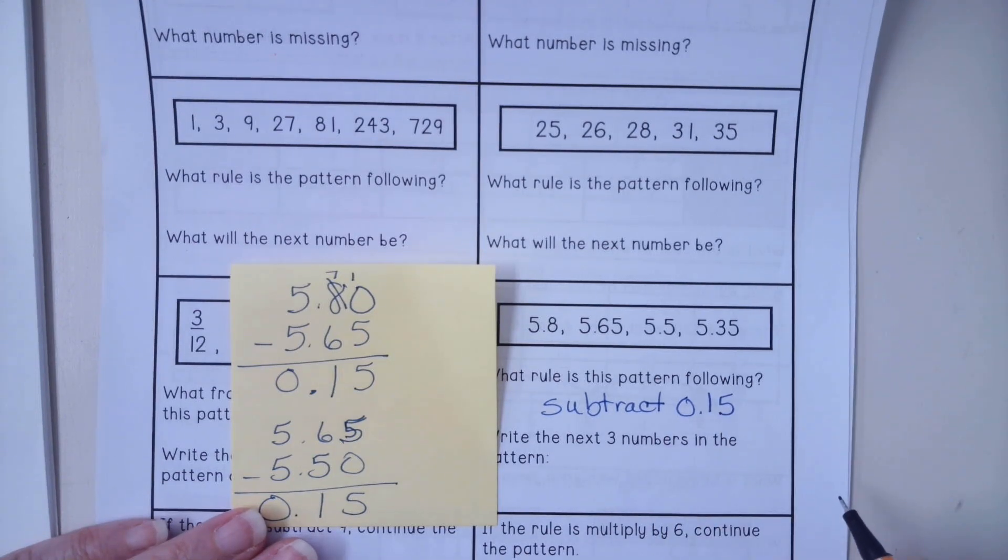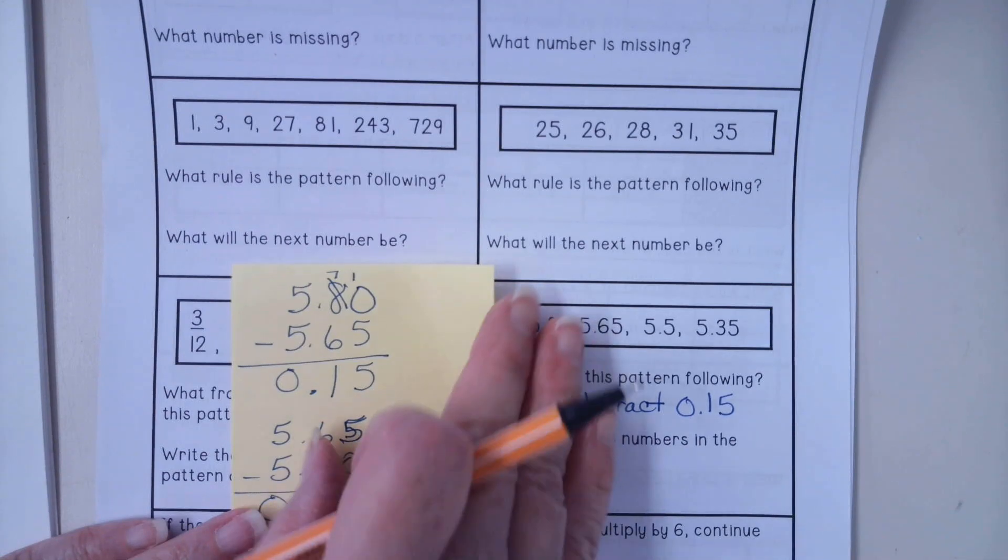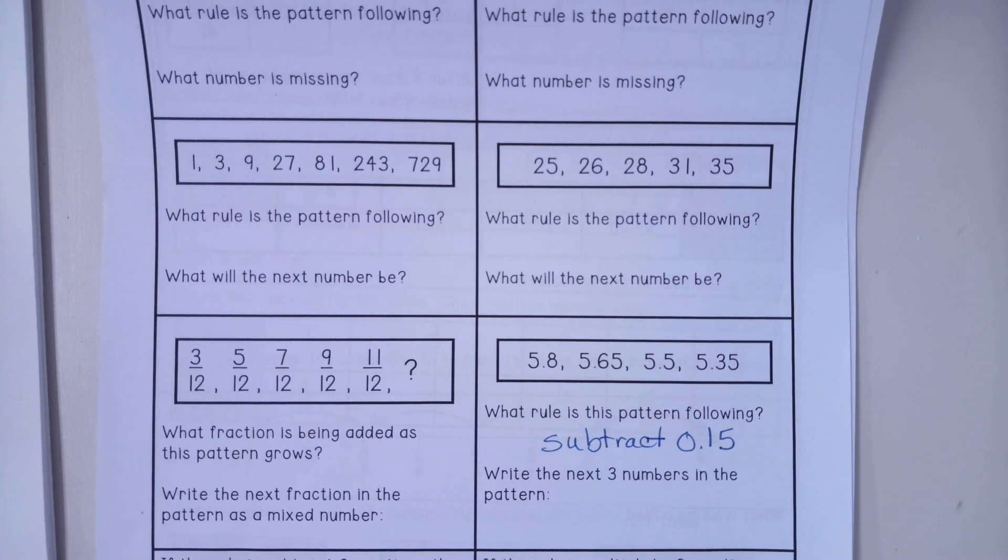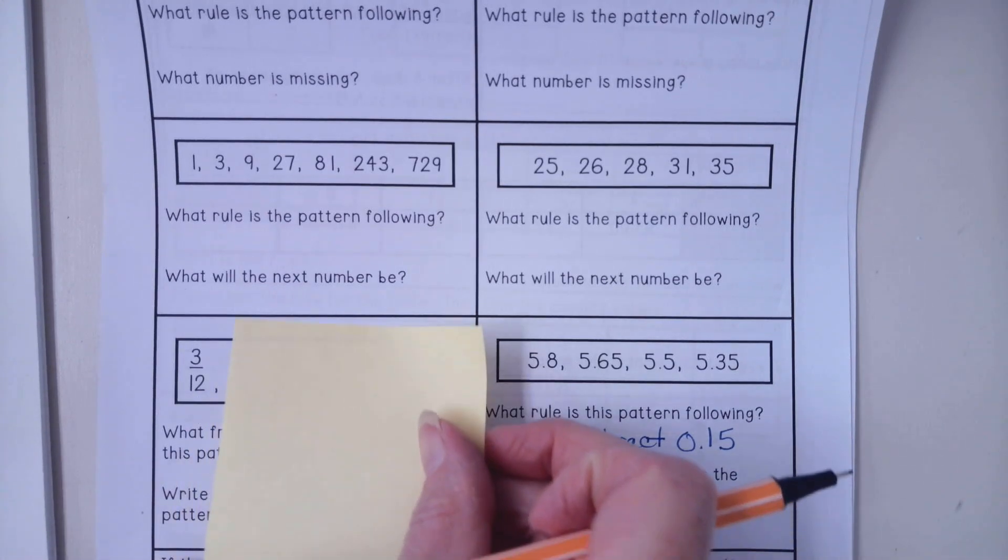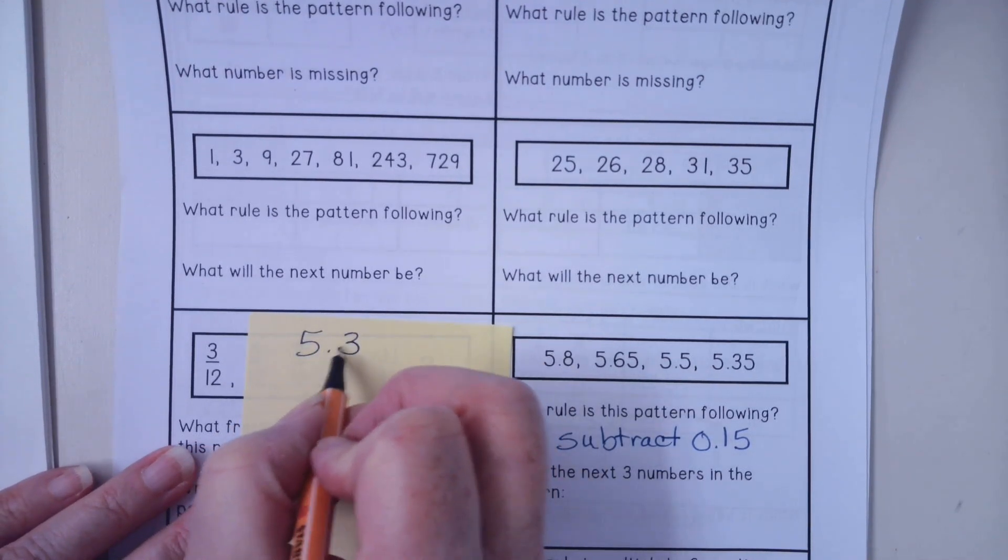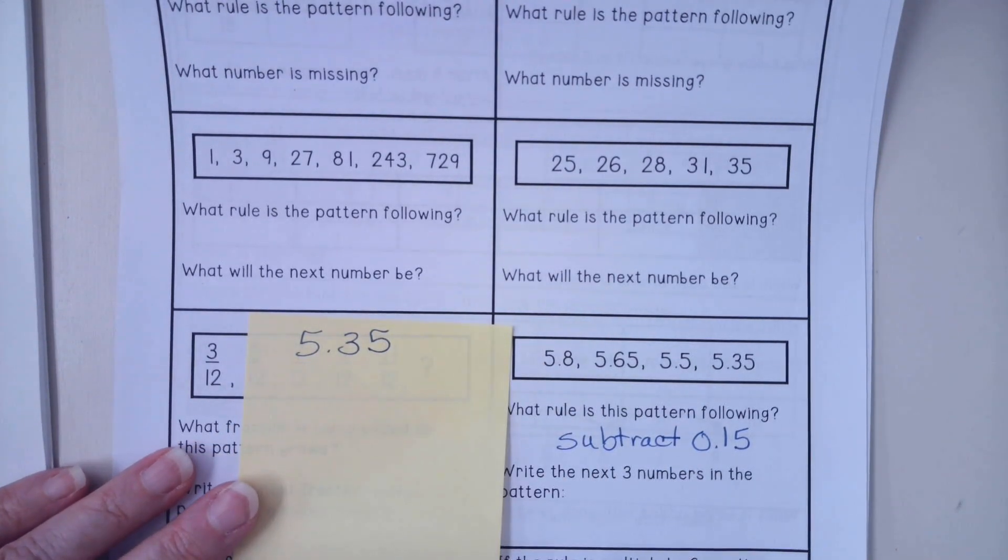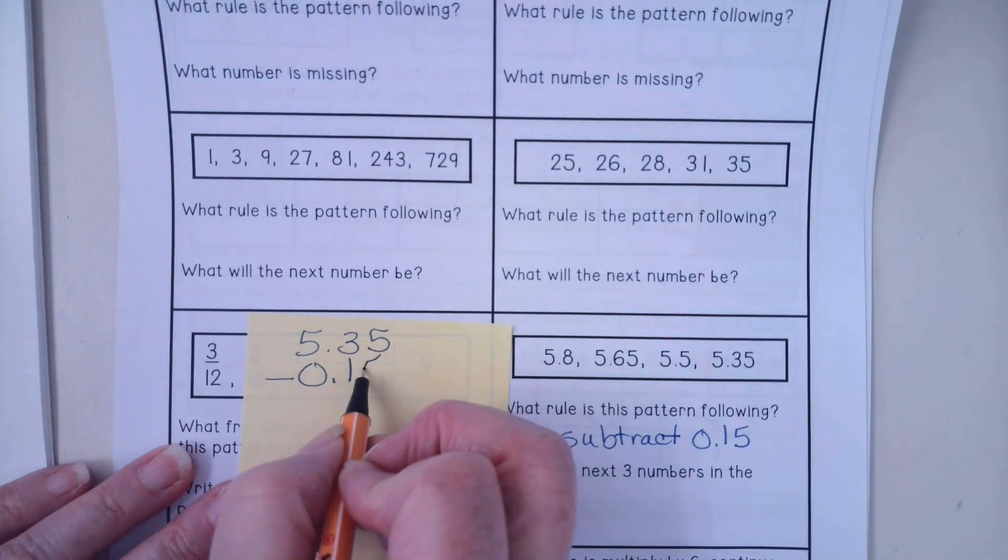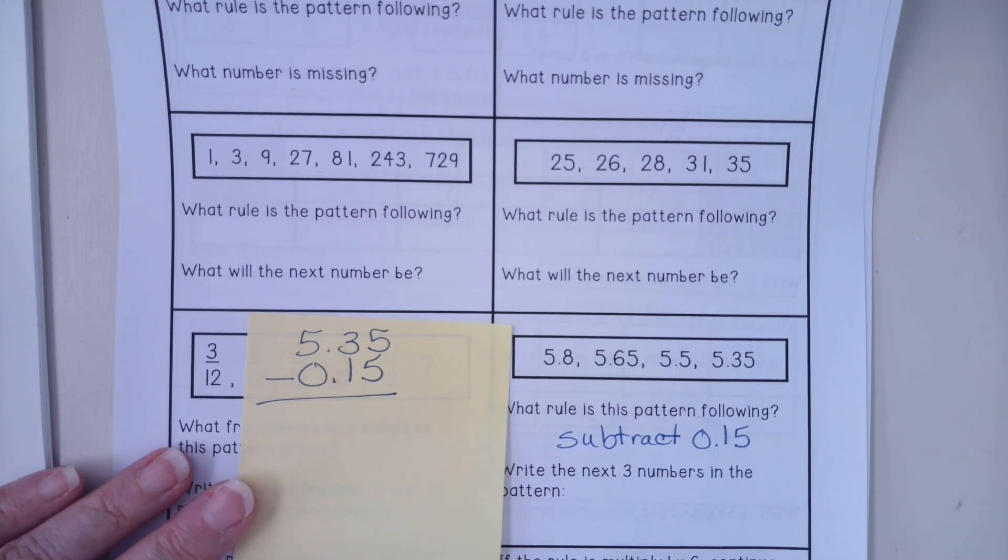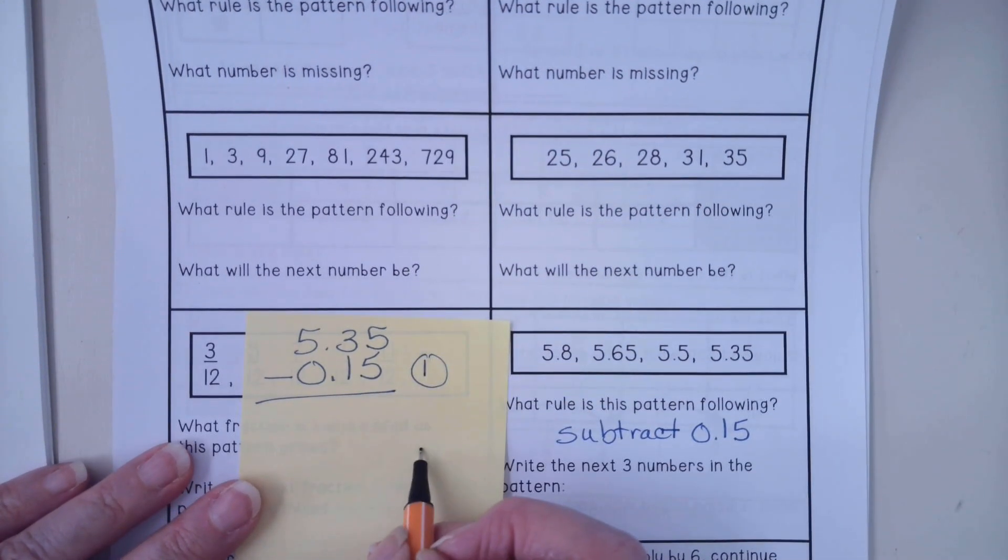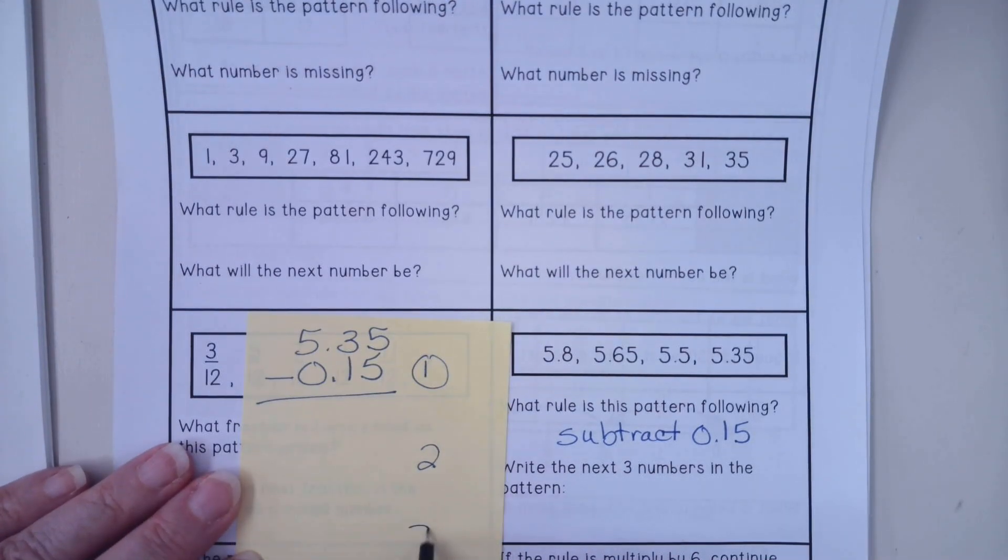Now it is asking us to calculate out the next three numbers. So you might want to write down 5.35 and you are going to subtract out 0.15. That will get you number one. Then you're going to do it again and then one more time after that to get your final answer.